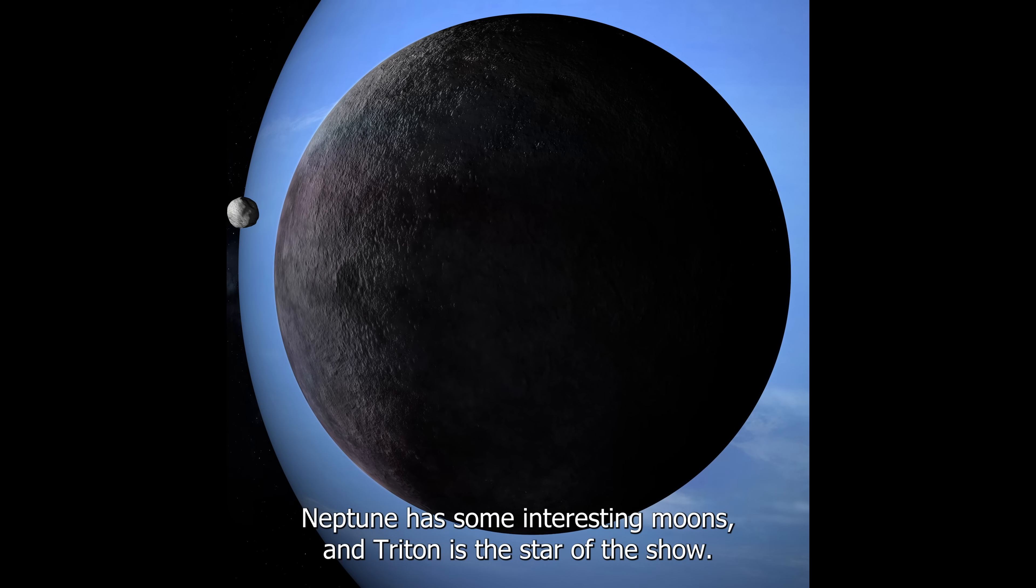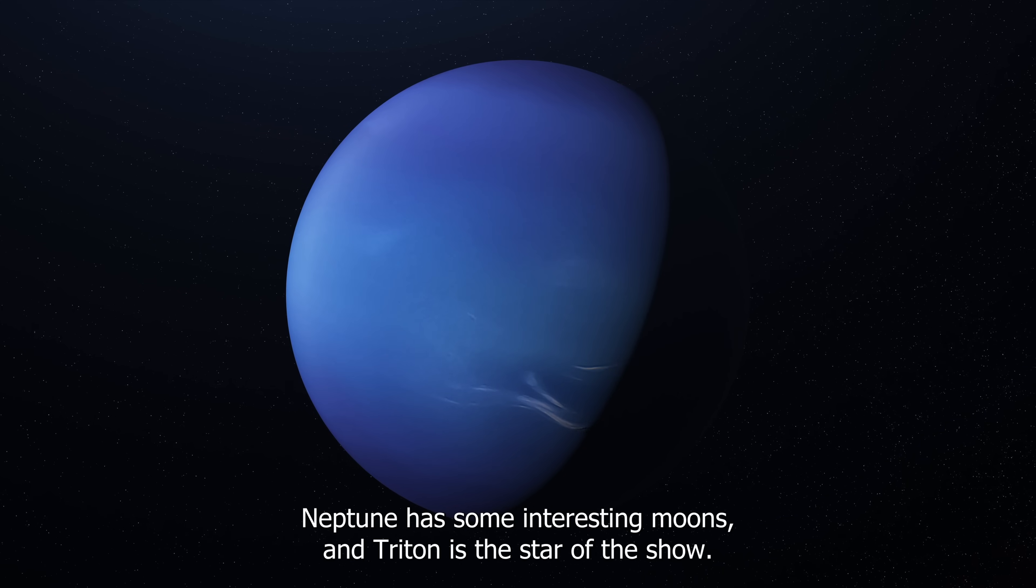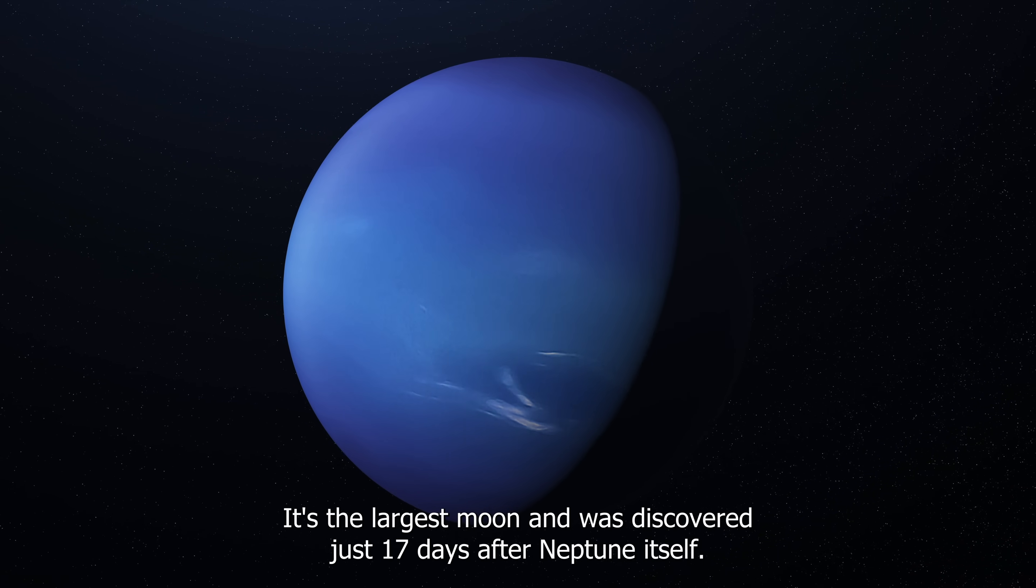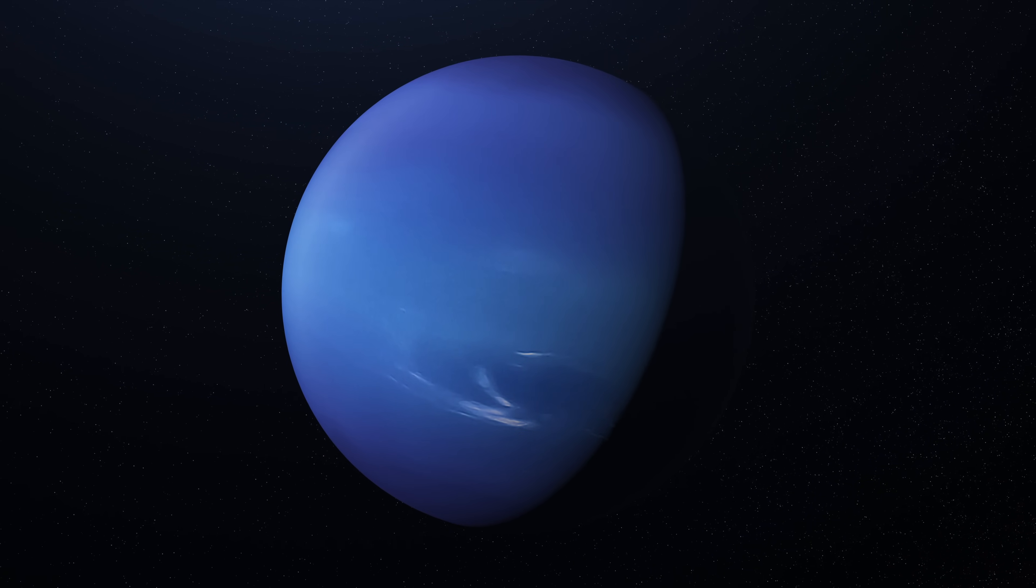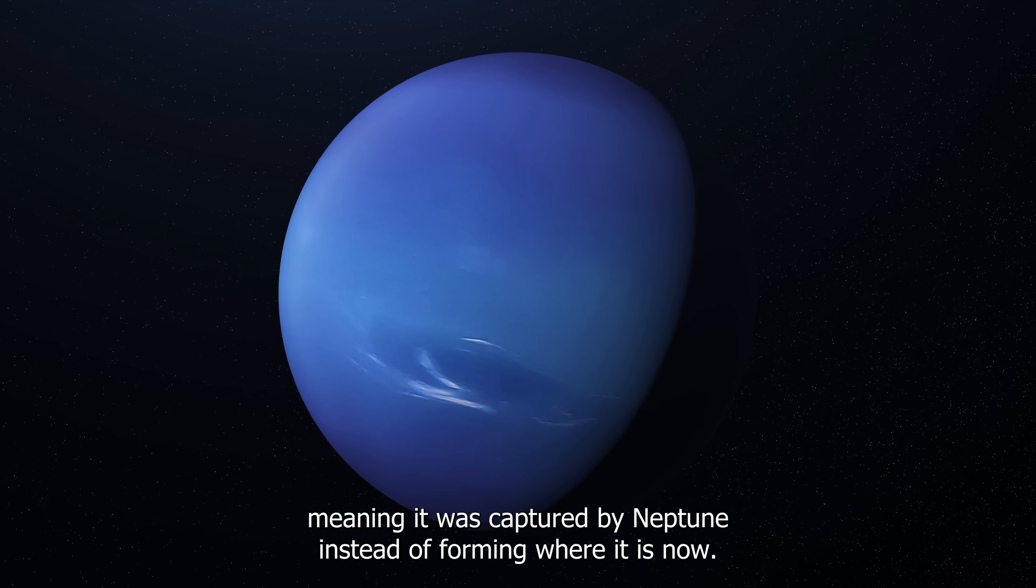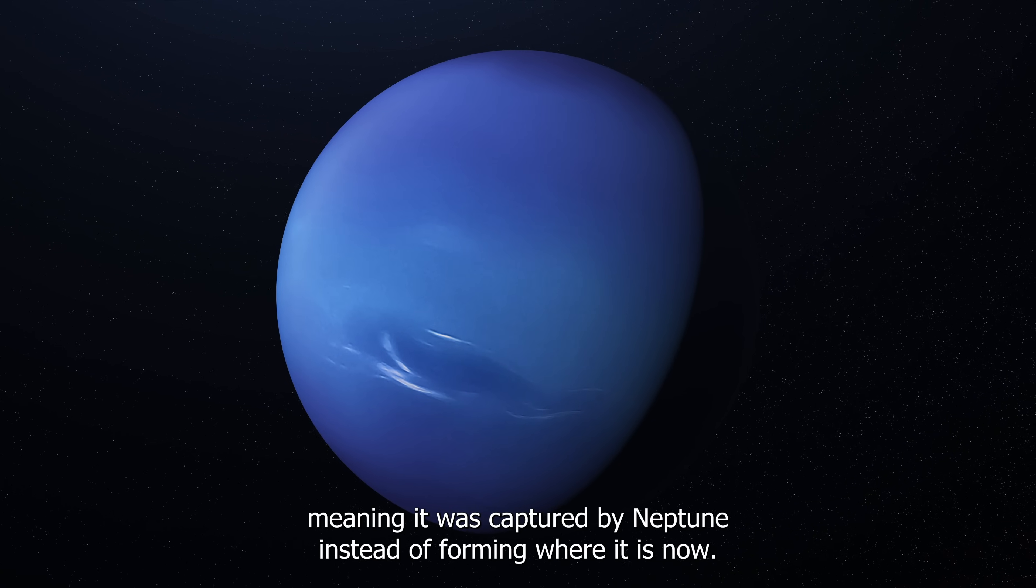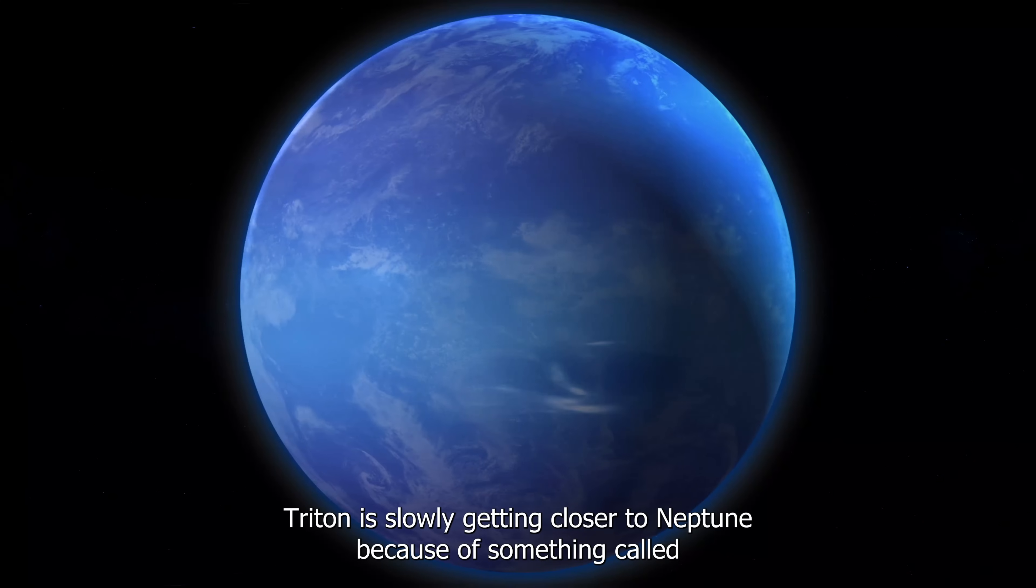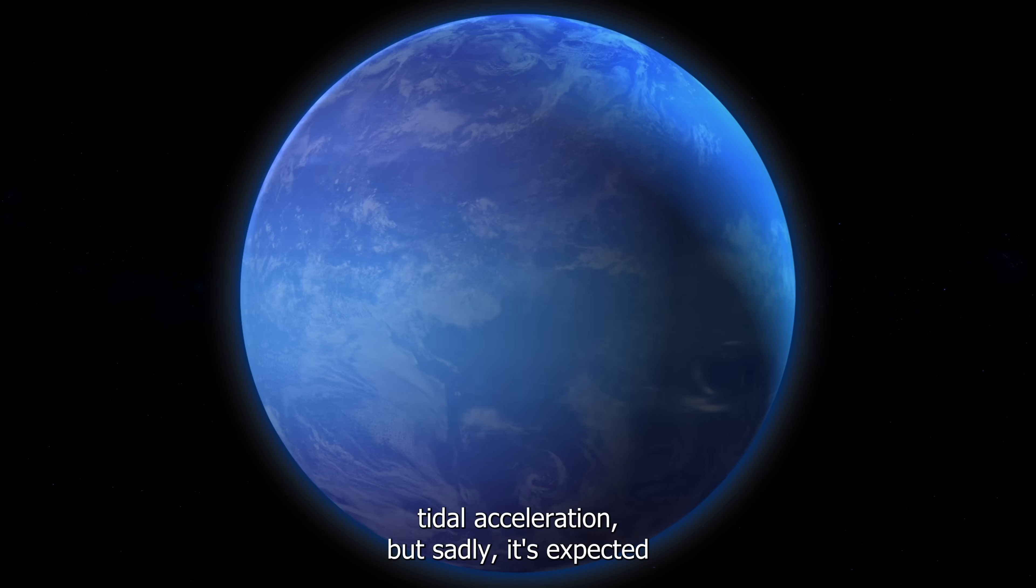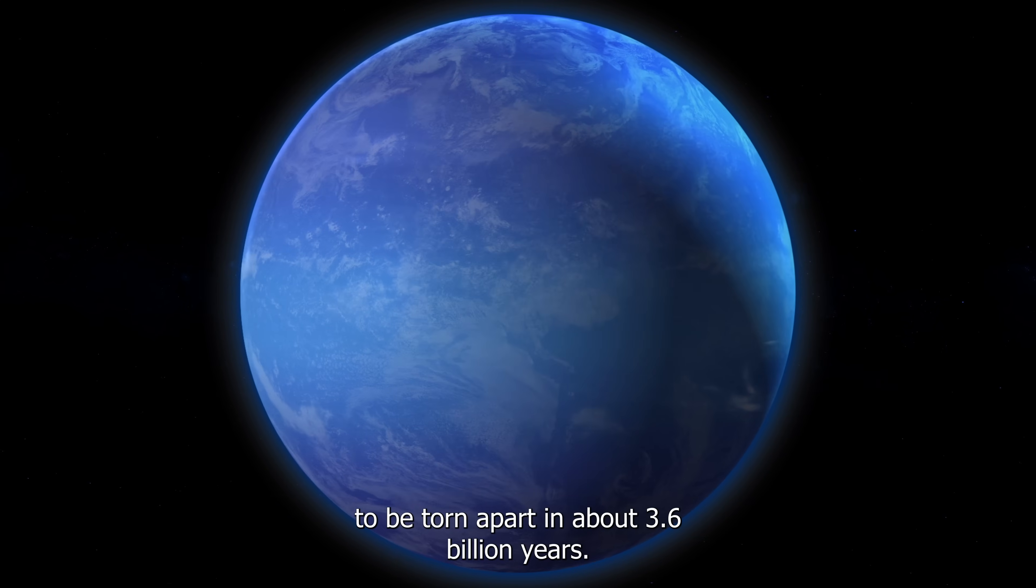Neptune has some interesting moons, and Triton is the star of the show. It's the largest moon and was discovered just 17 days after Neptune itself. Triton is unique because it has a retrograde orbit, meaning it was captured by Neptune instead of forming where it is now. Triton is slowly getting closer to Neptune because of something called tidal acceleration. But sadly, it's expected to be torn apart in about 3.6 billion years.